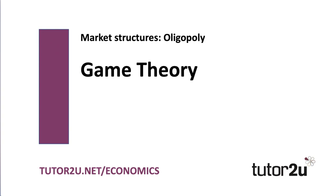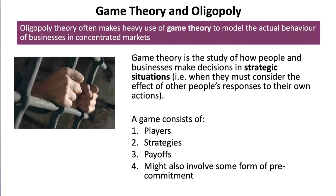Hello and welcome back to this final part of our Oligopoly Online lesson. In this session we're going to be exploring the topic of game theory. Oligopoly theory often makes heavy use of game theory to model the actual behaviour of businesses in concentrated markets. The whole purpose of game theory is to try and illustrate business behaviour, but also interdependence and uncertainty. Game theory is a study of how people and businesses make decisions in strategic situations, when they must consider the effect of other people's responses to their own actions.